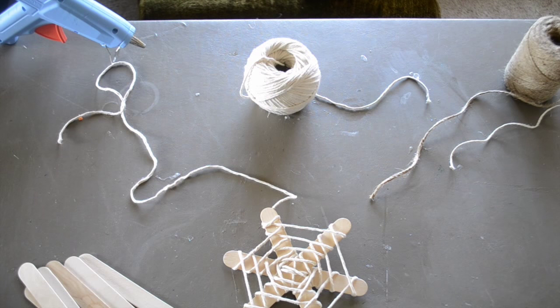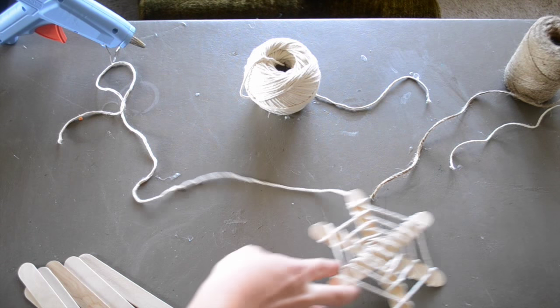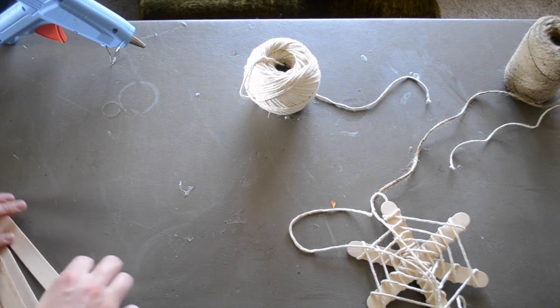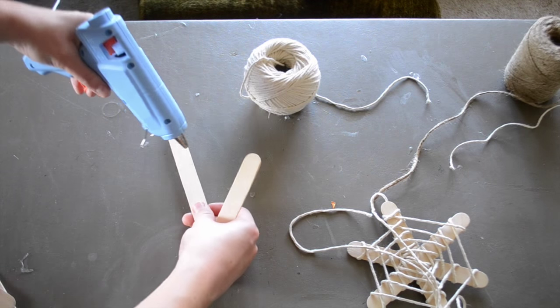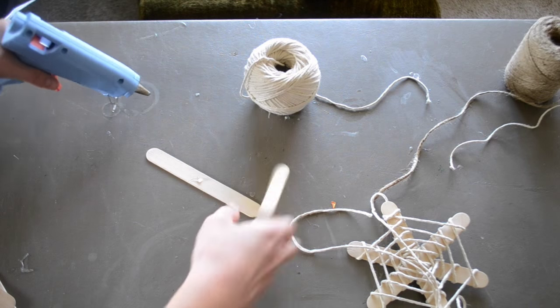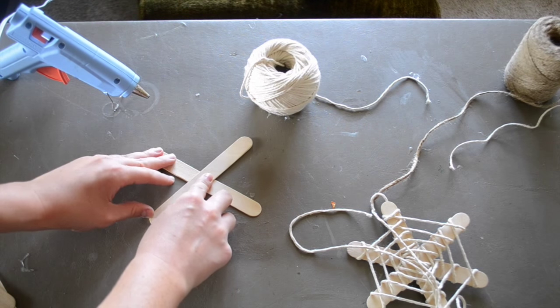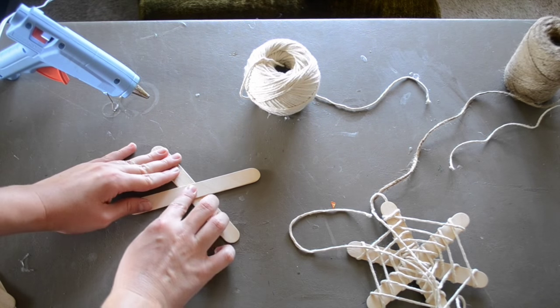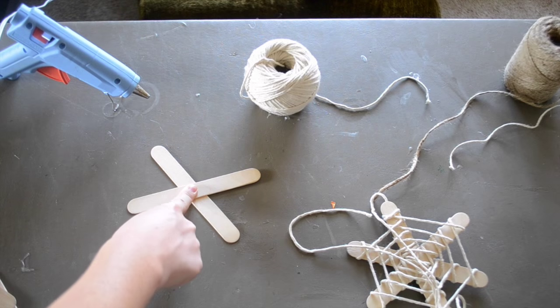Okay, so the first step in making these awesome spider webs is composing the popsicle stick portion of this project. I'm going to start by gluing two popsicle sticks in the shape of an X. I'm just going to use a dot of hot glue right there in the center and place my popsicle stick over it. Try to get these as even as possible. I'm just going to press down for a second to make sure that glue is held tight.